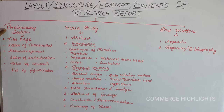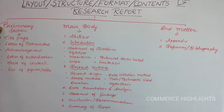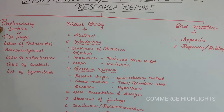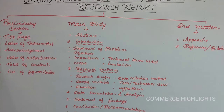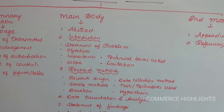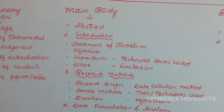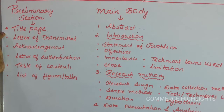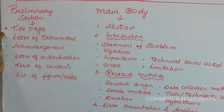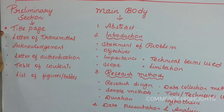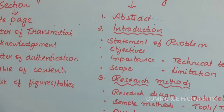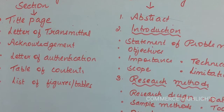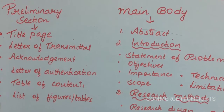The first section of a research report is the preliminary section. This preliminary section should first include a title page, which is generally termed as the cover page — the first page of your research report. This title page should contain three important things: the title of your research, and this title should be simple, clear, and crisp.